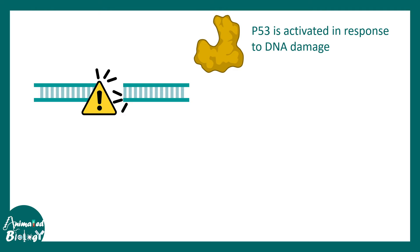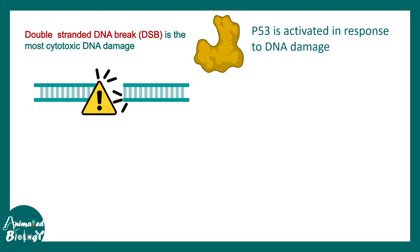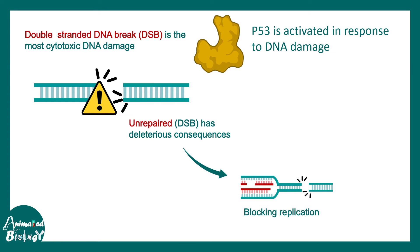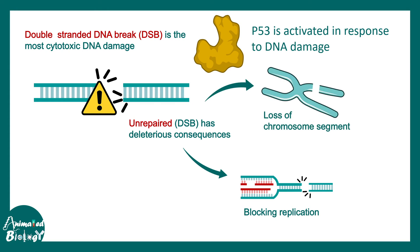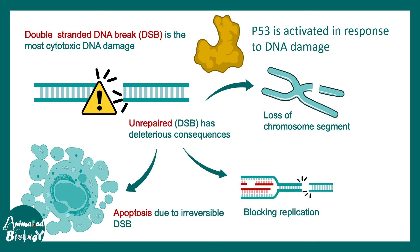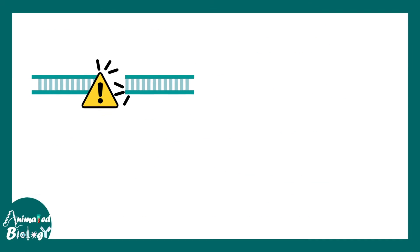p53 is activated in response to DNA damage. Imagine there is a double-stranded DNA break like this one. Double-stranded DNA breaks are the most cytotoxic, because if unrepaired, they would have deleterious effects like blocking replication. Even one segment of the chromosome could be lost during segregation, and ultimately these cells could die. So, obviously, when p53 is mutated, none of these processes can happen, and there is accumulation of mutations. That is why p53 is sometimes known as the guardian of the genome.